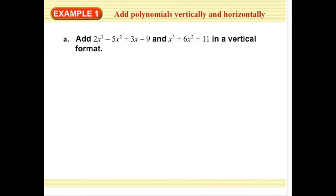So I have two polynomial equations: 2x cubed minus 5x squared plus 3x minus 9, and I have x cubed plus 6x squared plus 11. Now when you look at this equation, I left a space here, and that's because I don't have any term in my second polynomial that has just an x variable. There's nothing there. I have an x cubed, I have an x squared, I have a constant term which is 11, but I don't have just an x.